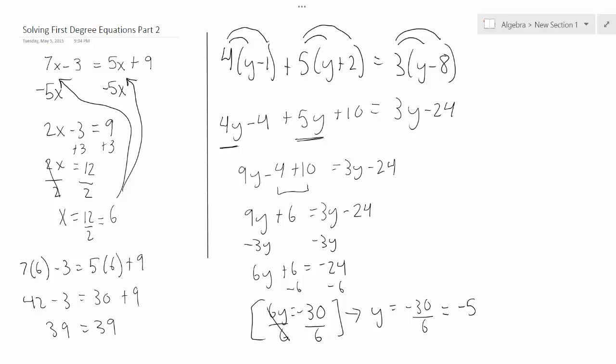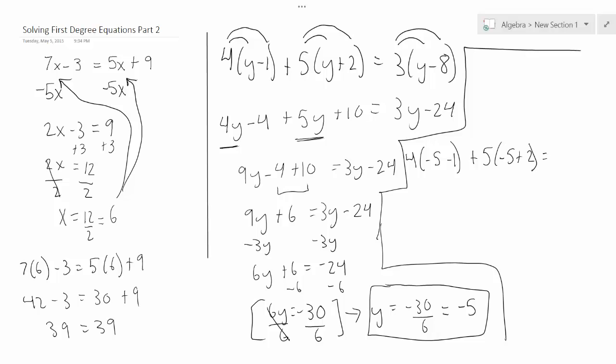And all you do is plug this answer back in to the original equation, and then you will solve. So let's go ahead and do that. 4 times negative 5 minus 1 plus 5 times negative 5 plus 2 equals 3 times negative 5 minus 8.